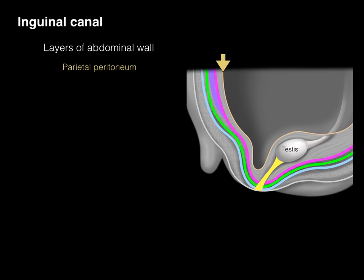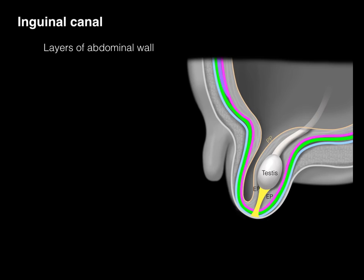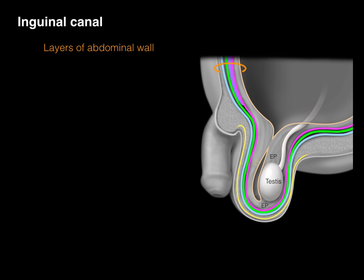So there's our testis. This picture shows the same thing, with all those layers of the abdominal wall layered together. As that testis descends, notice it's pulling all the layers of the abdominal wall with it, until finally it's within the scrotal sac. The layers of the abdominal wall — shown with that orange semicircle — correspond to the same colors and layers that make up the spermatic cord and eventually the scrotal sac.